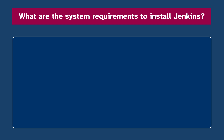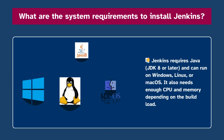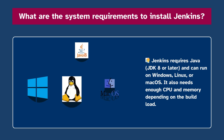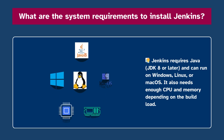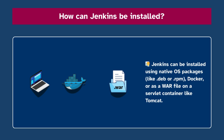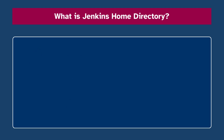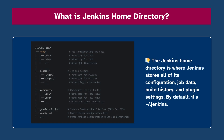Number sixteen: What are the system requirements to install Jenkins? Jenkins requires Java JDK 8 or later and can run on Windows, Linux, or macOS. It also needs sufficient CPU and memory depending on the build load. Number seventeen: How can Jenkins be installed? Jenkins can be installed using native OS packages, Docker, or as a WAR file on a servlet container like Tomcat.